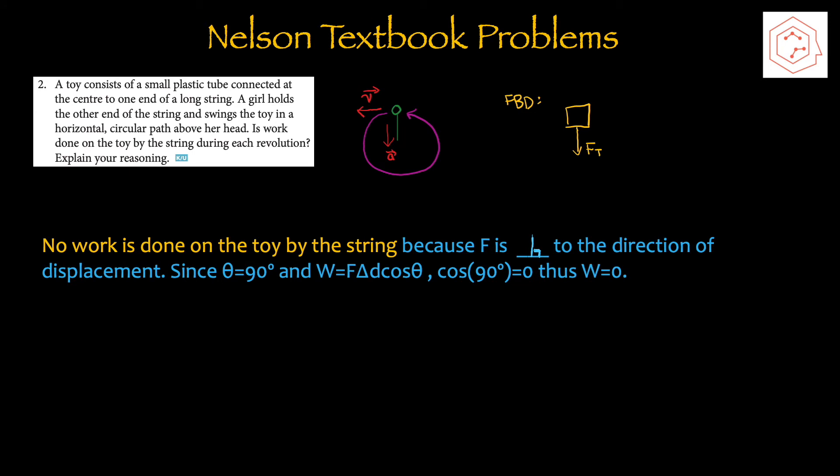Question 2: A toy consists of a small plastic tube connected at the center to one end of a long string. A girl swings the toy in a horizontal circular path above her head. Is work done on the toy by the string? No work is done because the force is perpendicular to the direction of displacement — velocity is always perpendicular to centripetal acceleration. Since theta equals 90 degrees, cos 90 equals zero, thus work equals zero.